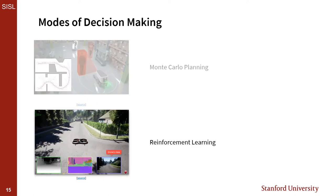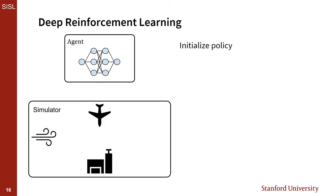The analog to methods that allow us to learn intuition in the machine decision domain are a class of methods called reinforcement learning. Reinforcement learning, unlike Monte Carlo planning, seeks to learn a policy—something that from any state in our entire state space will tell us what action to take—and we want to learn this entirely before ever taking a single step in the real world. When we use a neural network, basically a high-dimensional function approximator, to represent our policy, we refer to this as deep reinforcement learning.